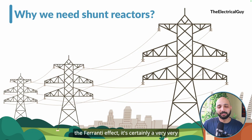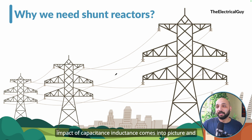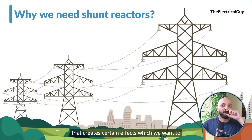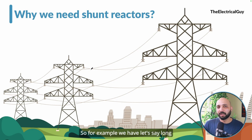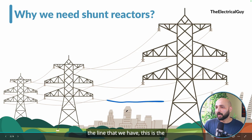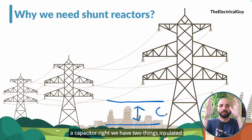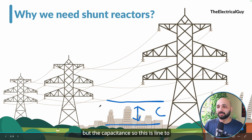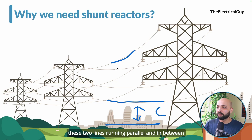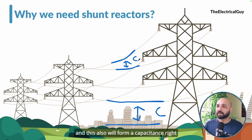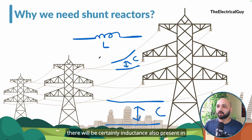In the previous video we discussed the Ferranti effect — a very interesting effect. Generally in long distance transmission lines, 200 kilometers and above, the impact of capacitance and inductance comes into picture and creates certain effects we want to avoid. We have a live line carrying current and at the bottom we have the ground — this is nothing but a capacitor, two conductors insulated by an insulating medium. This is line-to-ground capacitance. We also have two lines running parallel with air as insulation between them, which also forms a capacitance. Similarly, this transmission line carries alternating current, so there will certainly be inductance present in the line as well.